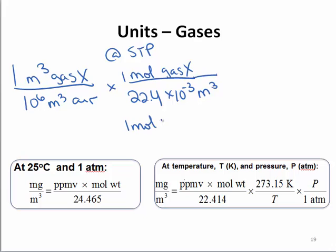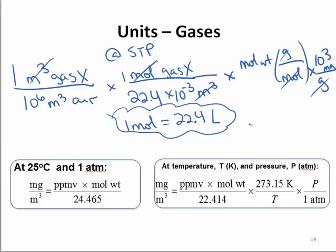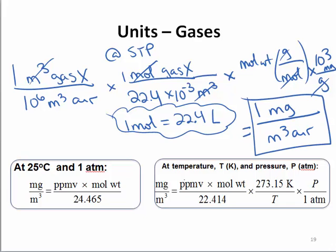So one mole is equal to 22.4 liters, which is 22.4 times 10 to the negative three meters cubed. If you multiply this by the molecular weight of the gas, that has units of grams per mole. The moles cancel out, and if we convert this to milligrams, 10 to the three milligrams per gram, we're left with one milligram per meter cubed of air.